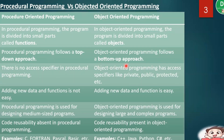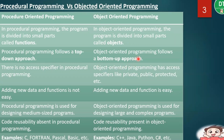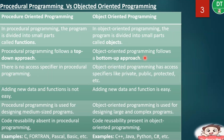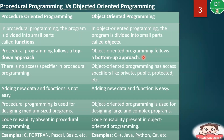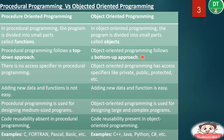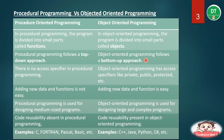Object-oriented programming follows a bottom-up approach. In object-oriented programming, we have methods, procedures, classes, and objects. We can define the object anywhere — we can call a procedure from the top of the program even if it was created at the bottom. So that is valid in OOP. There is no access specifier in procedural programming, meaning data can be accessed from anywhere in the program.